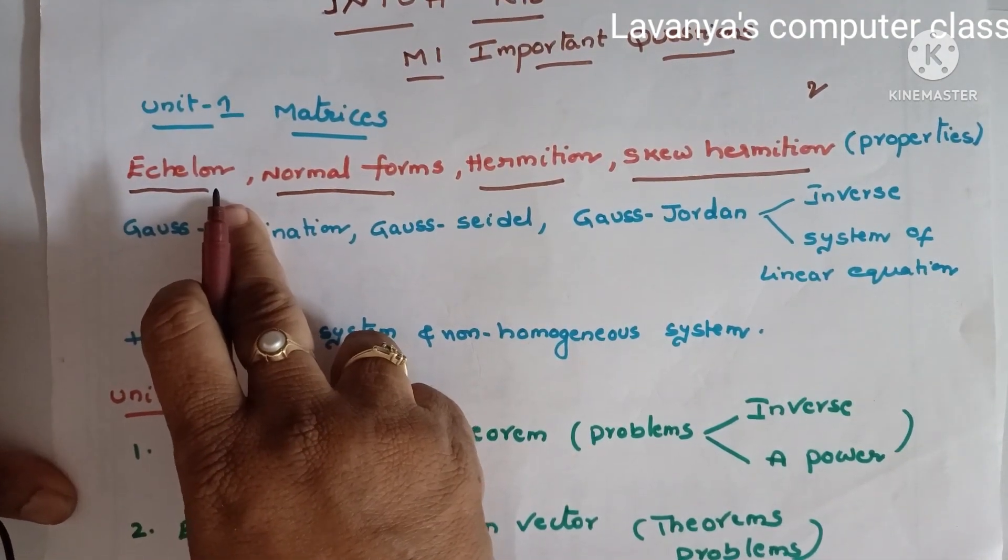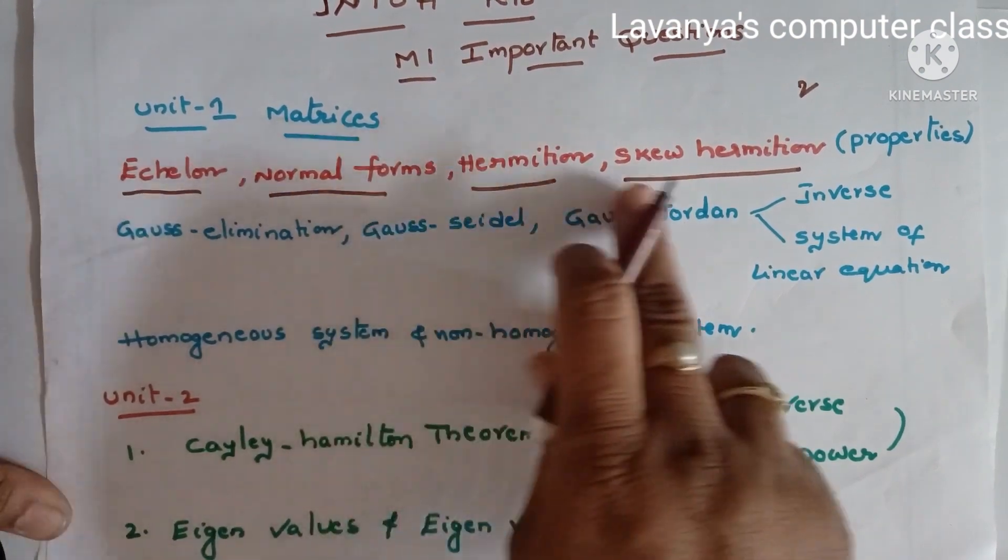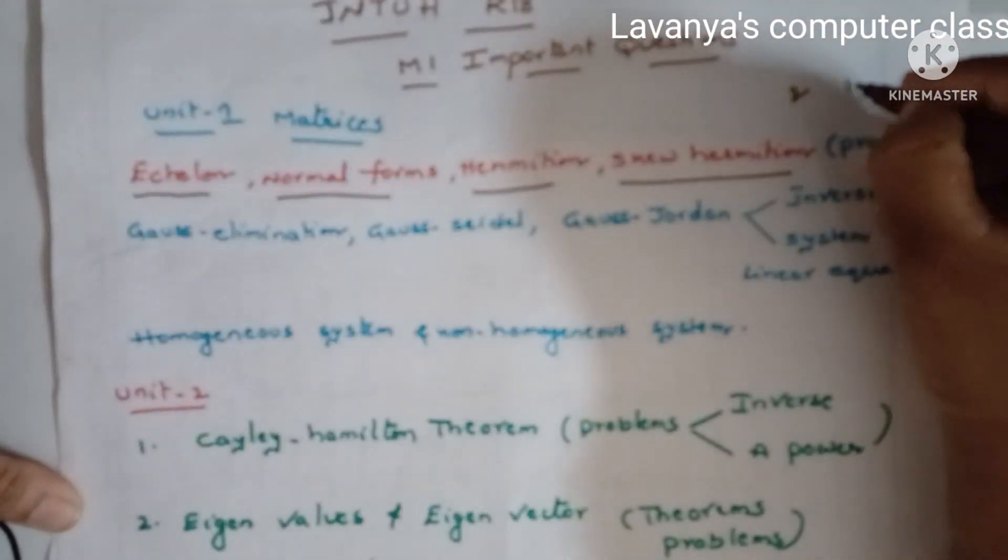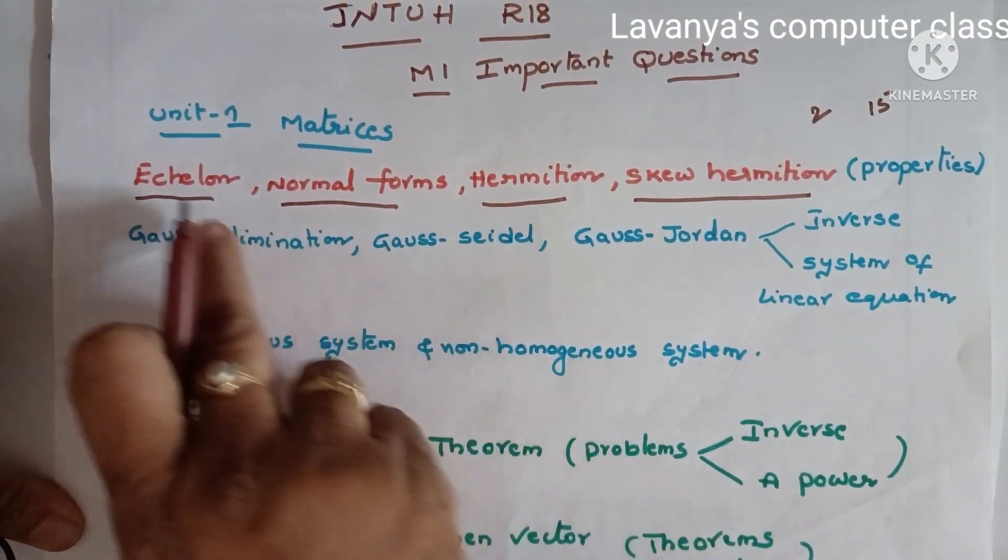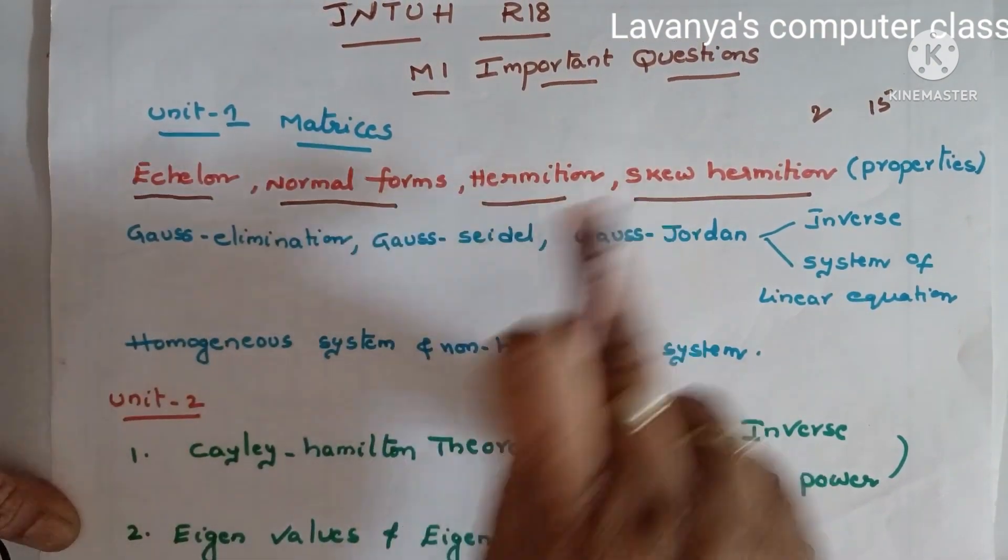So very important question. Compulsory one question is coming from these questions. One question means 15 marks because it is a corona pattern. So you can easily get good marks in these topics.